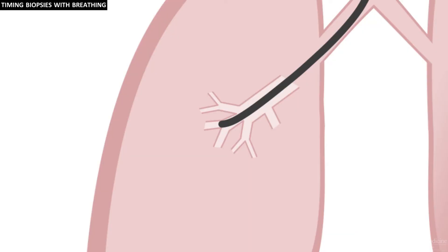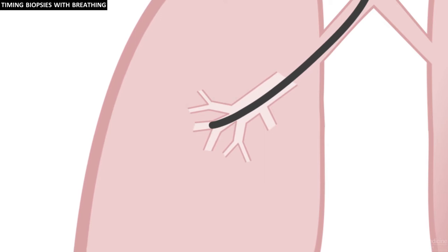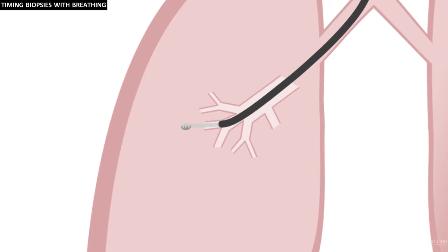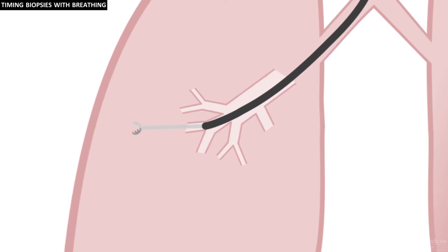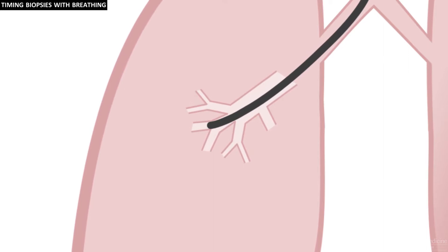Some providers time their biopsies with the patient's breathing. You can see in these images that the open forceps are passed out while the patient is inhaling and then closed at the end of exhalation. The reason for doing this is to try to obtain larger samples, because the forceps close on the lung parenchyma when it is at its most contracted. It may also allow sampling of more distal tissue because the alveoli move proximally during exhalation.